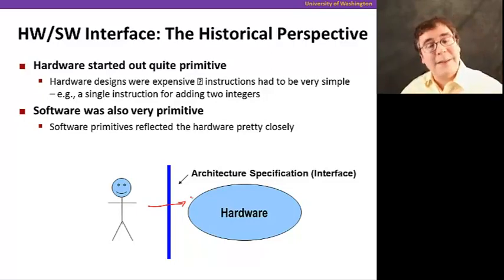So humans were able to write code directly to hardware without any abstraction at all. But then people got through, and that means that software was also very primitive because the software primitives reflected the hardware pretty closely. But then people got really excited about computers.